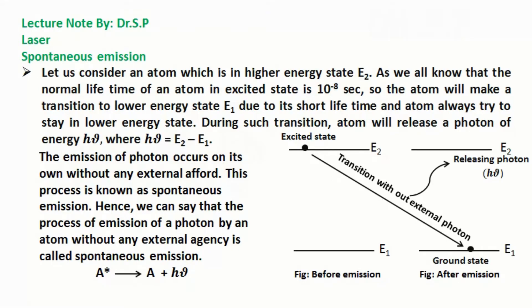Here excited state atom A* goes to ground state atom A releasing hν photon. In the figure it is clearly seen that the excited state atom goes to ground state atom without any external photon, releasing photon of hν.